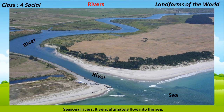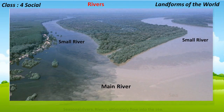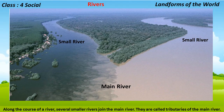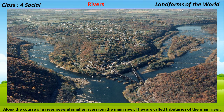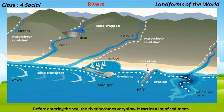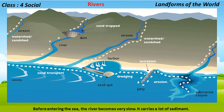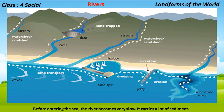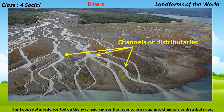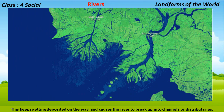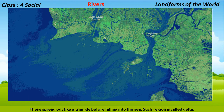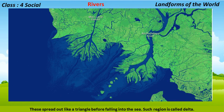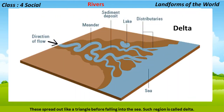Rivers ultimately flow into the sea. Along the course of a river, several smaller rivers join the main river; they are called tributaries of the main river. Before entering the sea, the river becomes very slow and carries a lot of sediment. This sediment gets deposited and causes the river to break up into channels called distributaries, which spread out like a triangle before falling into the sea. Such a region is called a delta.